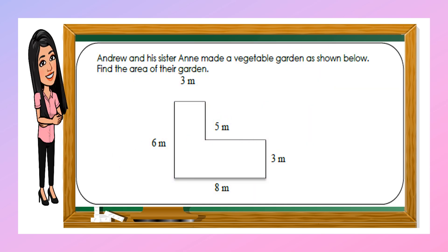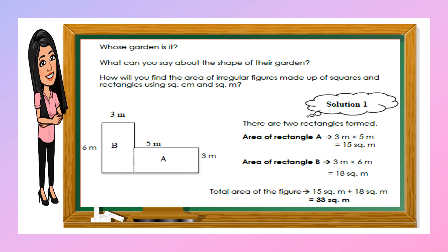Andrew and his sister Anne made a vegetable garden as shown below. Find the area of their garden. As you can see, we have here an irregular figure. To solve this irregular figure, we have two solutions. In this irregular figure, we have two rectangle forms.